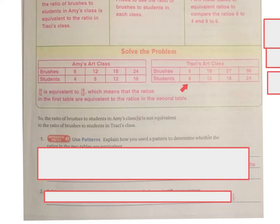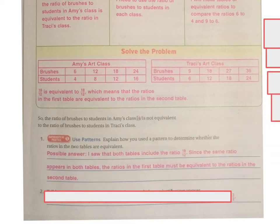So eighteen twelves is equivalent to nine six, so eighteen twelves is also equivalent to six fours. So the ratio of brushes to students in Amy's class is equivalent to the ratio of brushes to students in Tracy's class. Use the patterns. Explain how you use the pattern to determine whether the ratios in the two tables are equivalent. Well, simply, I saw that both tables included eighteen twelves, and since the same ratio appears in both tables, the ratio in the first table must be equivalent to the ratio in the second table.